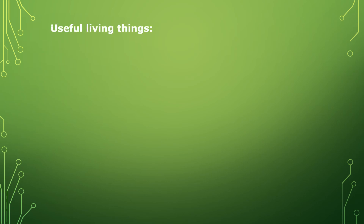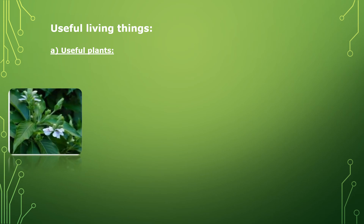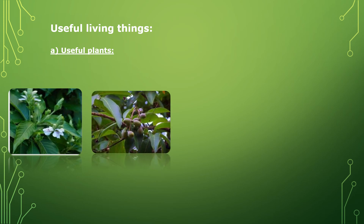Useful living things — first we will see useful plants. Plants are used for household as well as industrial purposes. For example, fenugreek (methi), potato, okra (bhindi), apple, and banana are used as food.